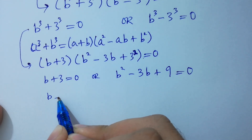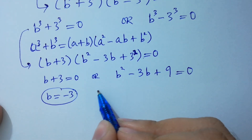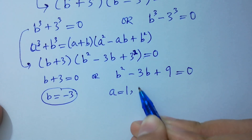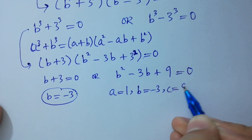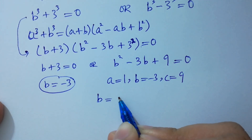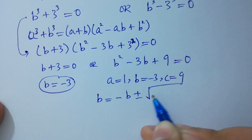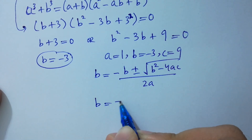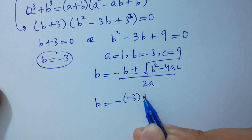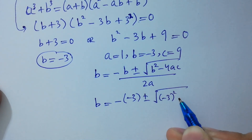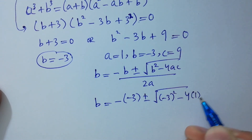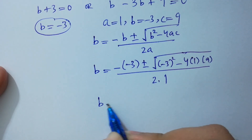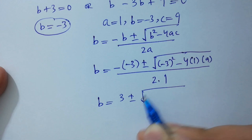Here we have the real solution B equals minus 3, and the second part is a quadratic equation. So we have a equals 1, b equals minus 3, c equals 9. The quadratic formula is B equals minus b plus or minus square root of b squared minus 4ac over 2a. Substituting the values: B equals minus of minus 3, plus or minus square root of minus 3 squared minus 4 times 1 times 9, over 2 times 1.